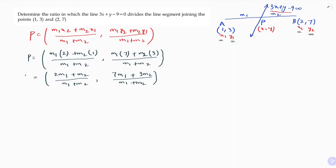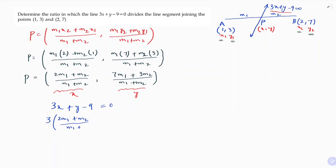This point P has x and y coordinates. I will substitute this value into the line equation 3x plus y minus 9 equals 0. So: 3 times (2m1 plus m2) by (m1 plus m2), plus (7m1 plus 3m2) by (m1 plus m2), minus 9 equals 0.